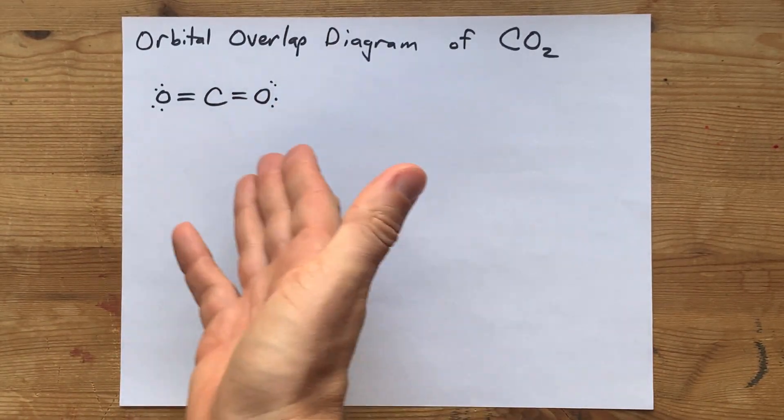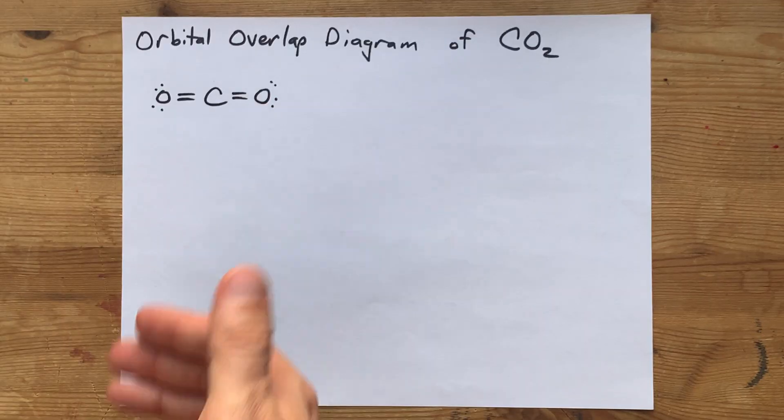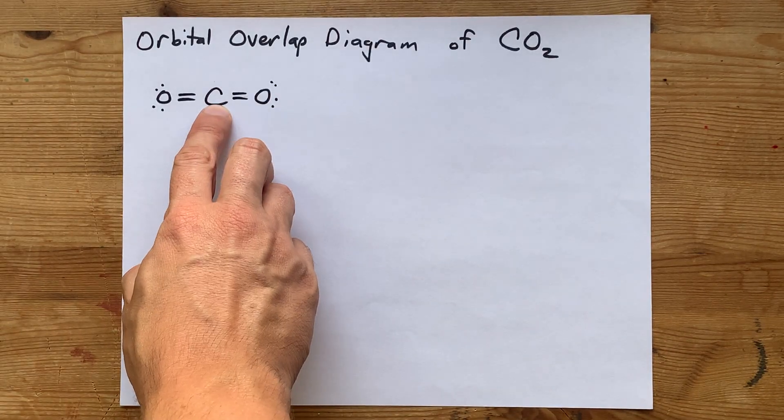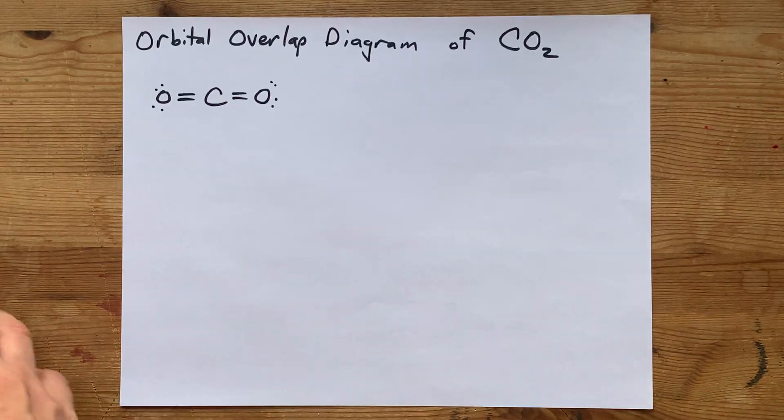Surely you know or can draw the Lewis structure for carbon dioxide. You have a carbon double bonded to each of two oxygens.